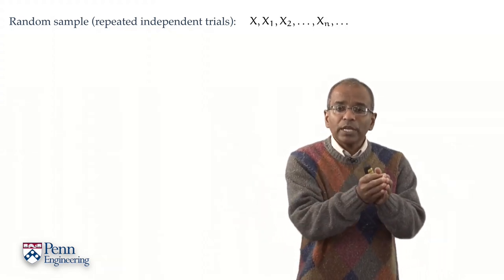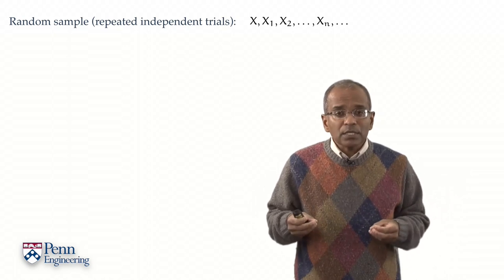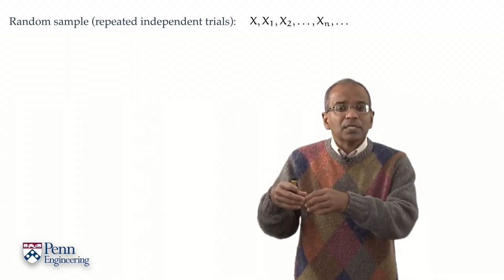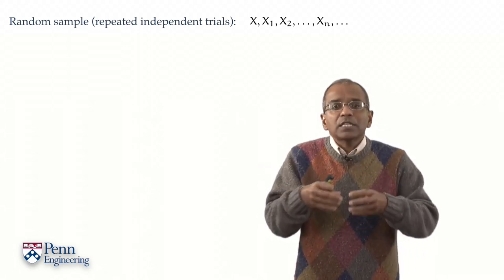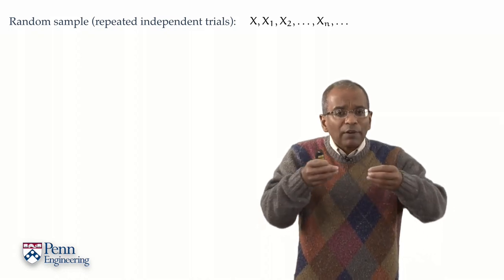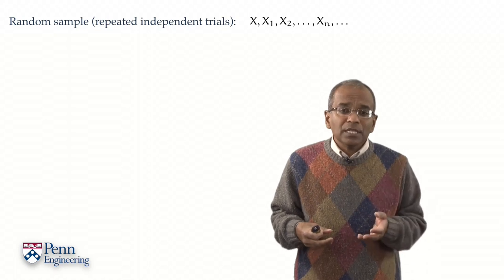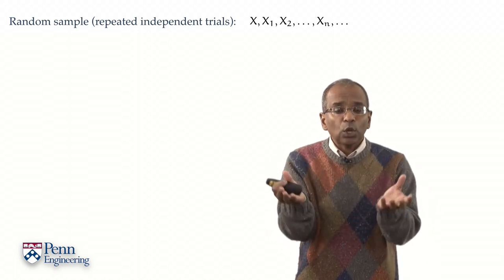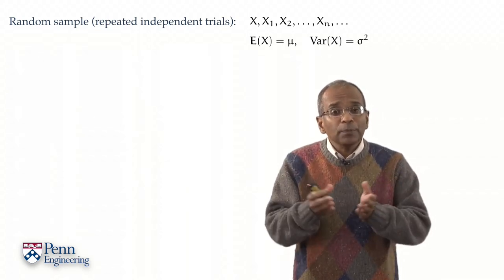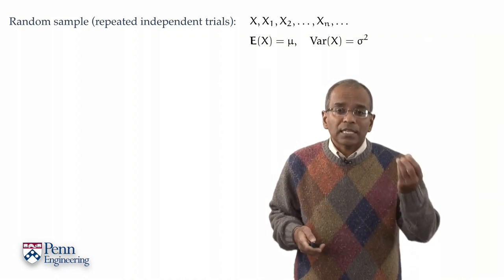So let X₁, X₂, X₃ be a sequence of independent trials. X represents an exemplar of this sequence. They all have a common probability law, a common distribution. And let us say for definiteness that the underlying probability law has an expectation μ and a variance σ².